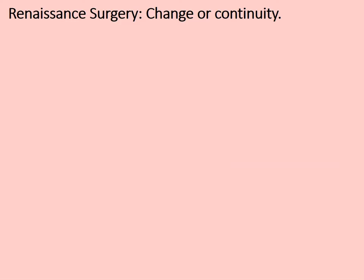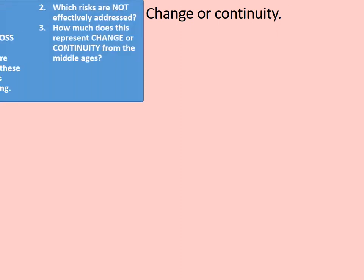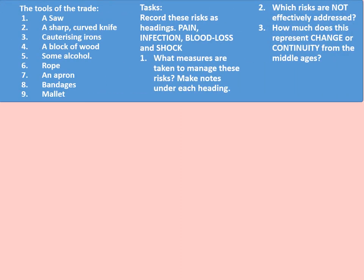Here's another example: Renaissance surgery. A reminder of the tools of the trade of the barber surgeon — a saw, a sharp curved knife, cauterizing irons, a block of wood, some alcohol, a rope, an apron, bandages, and a mallet.